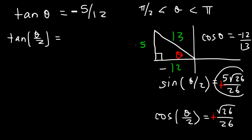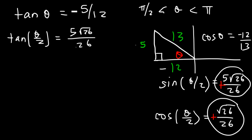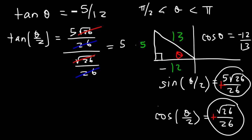Tangent(θ/2) is sine over cosine. The square root of 26 cancels, as does 26, so tangent(θ/2) equals 5.